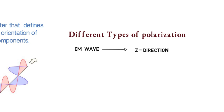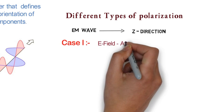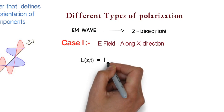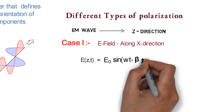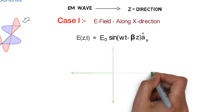For case 1, let's say we have electric field in positive x direction. So its equation will be E(z,t) = E0 sin(ωt - βz)ax. Here E0 is the amplitude of the electric field, omega is angular frequency, beta is phase constant, z shows the direction of wave propagation and x shows the electric field direction.